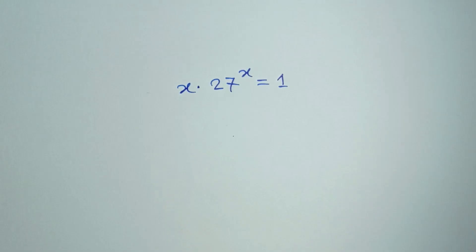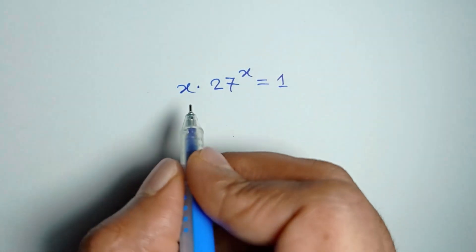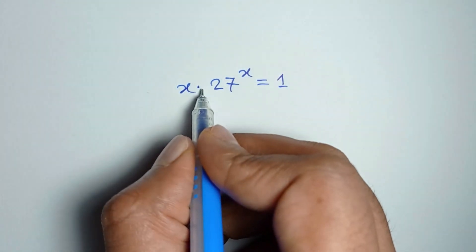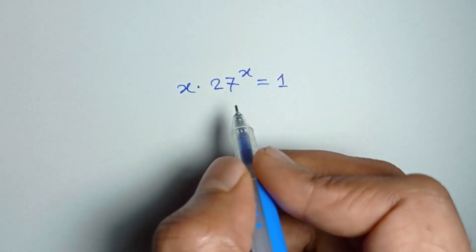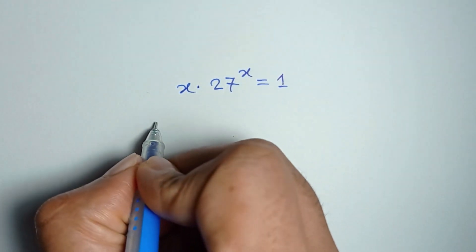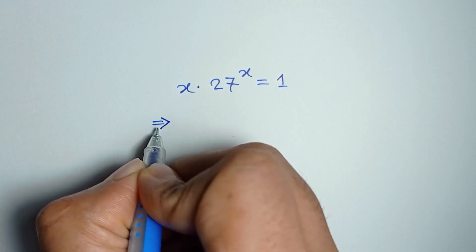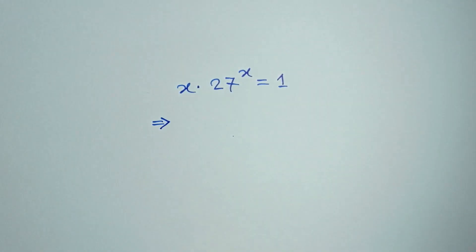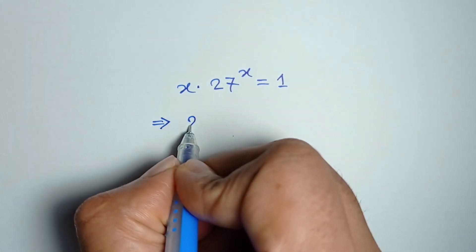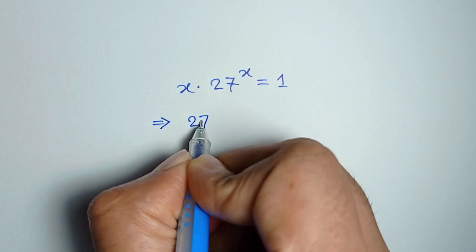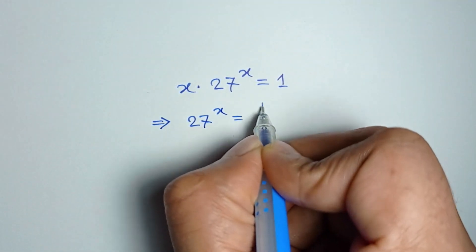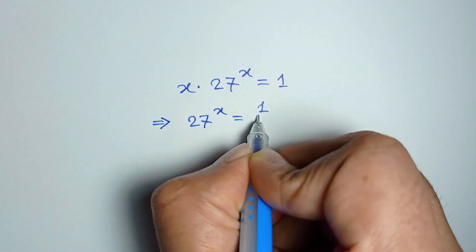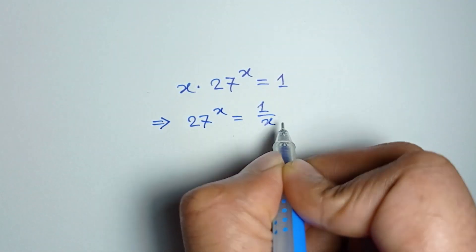We have to solve x times 27 to the power x equals 1. If we divide both sides by x, we get 27 to the power x is equal to 1 divided by x.